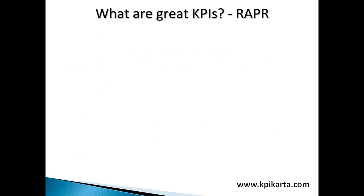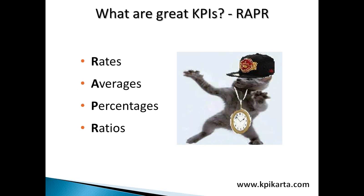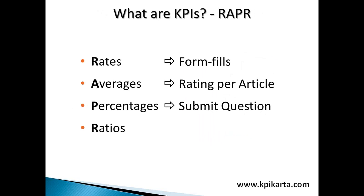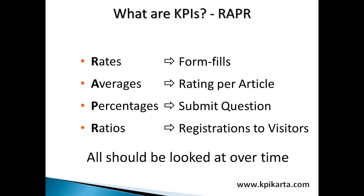So what are great KPIs? We think of these as the wrappers: rates, averages, percentages, and ratios. It might be the rate of form fills, the average rating per article, the percentage of people who submitted a question, or the ratio of registrations to visitors. If we doubled registrations in one month but also doubled the number of visitors, the ratio stays the same — which tells us our website is not performing any better, it just had more volume. So if we're looking at improving things, we need to look at the ratio, and all of these should be looked at over time.